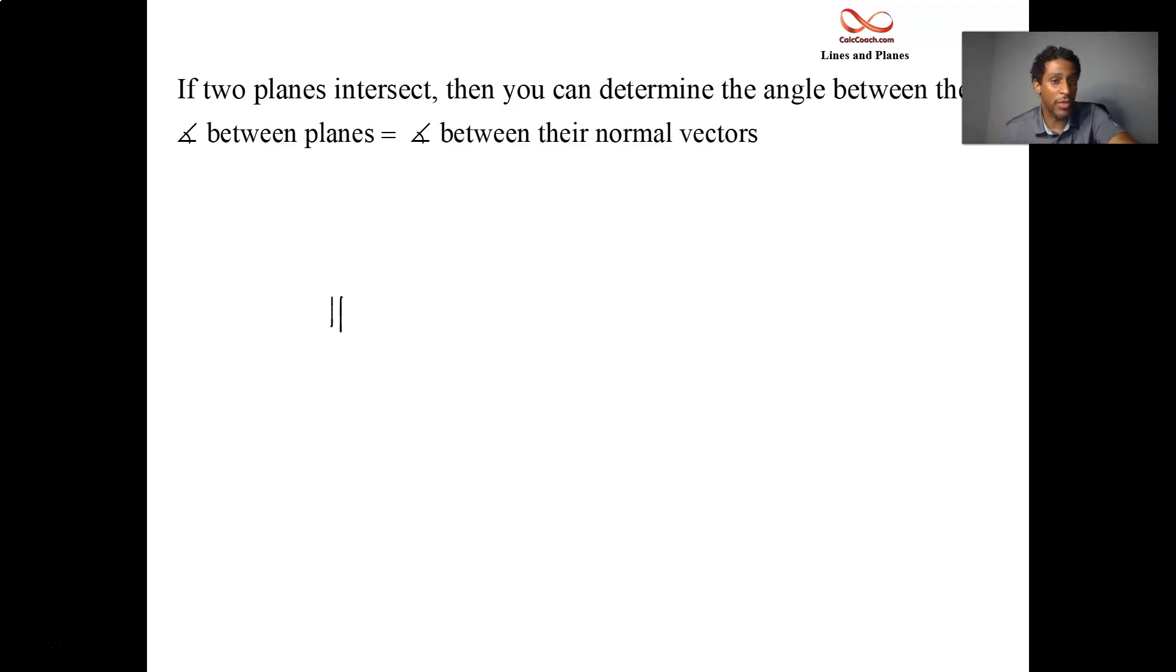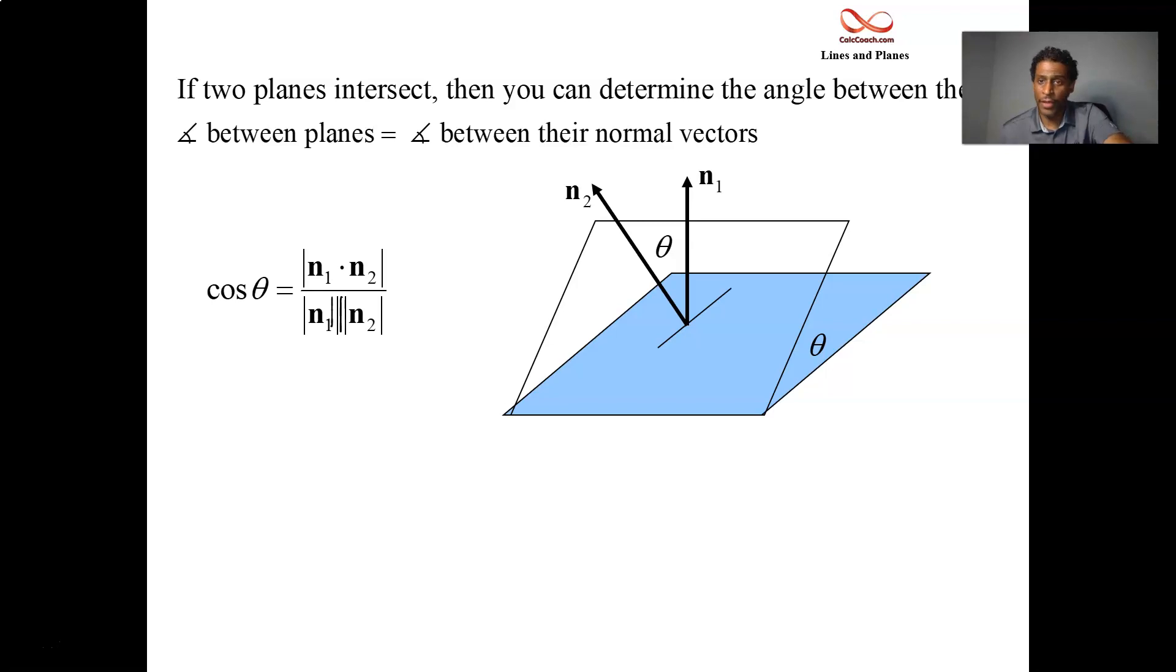It turns out that the angle between the planes is the same as the angle between the normal vectors. So we can then use the formula for the cosine of the angle between any two vectors.